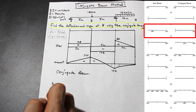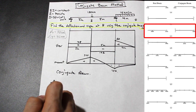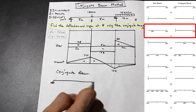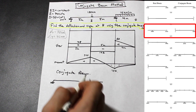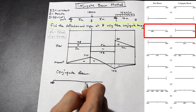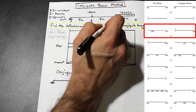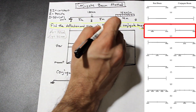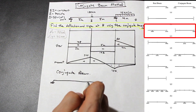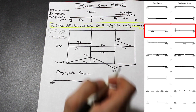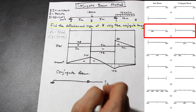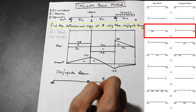The pin at A remains the same, the roller at C becomes an internal hinge, and the free end becomes fixed.